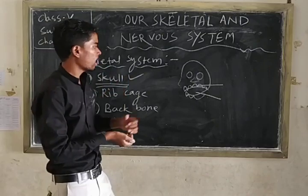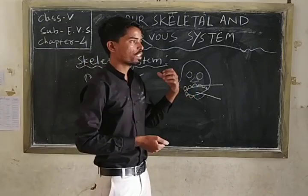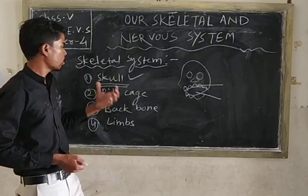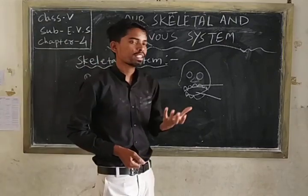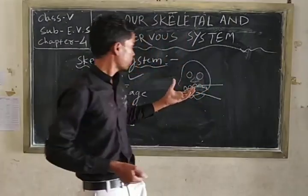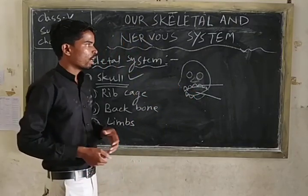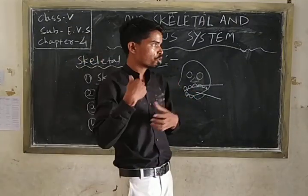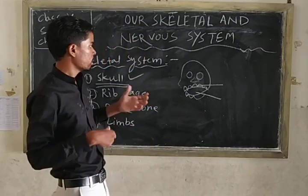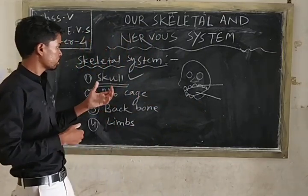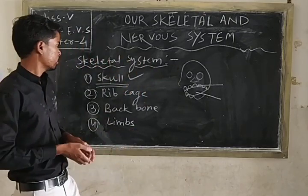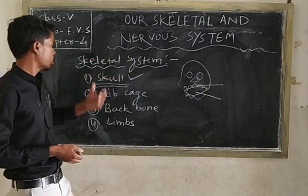The skull is fixed except for the lower jaw. The main functions of the lower jaw are talking and eating. The upper jaw is also involved in chewing food and talking.